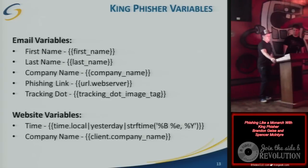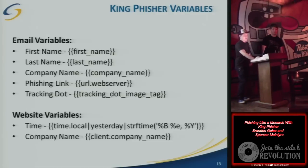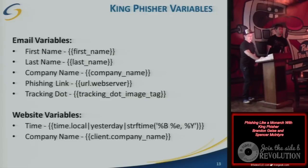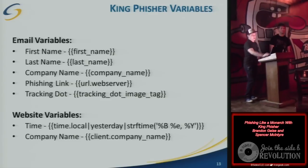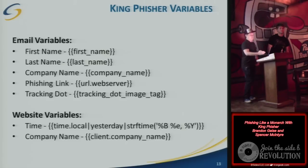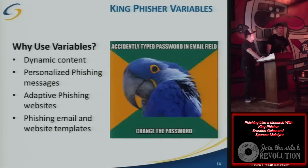There are also quite a few website variables. This is for the actual website the user is going to. With your HTML hosted on the Kingfisher server, you can put in a time variable that'll display yesterday, the previous day, a future day, or the current time. You can customize what phishing page they're landing on, as well as the company name. We like to tell people that something should have been done yesterday to try to get them to fill out the form.